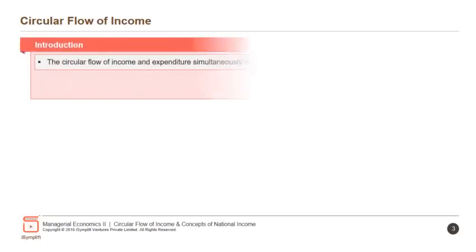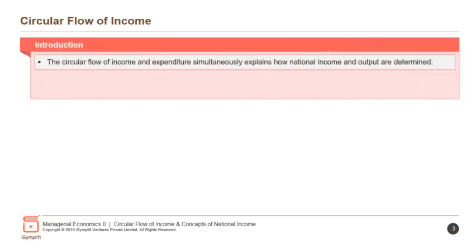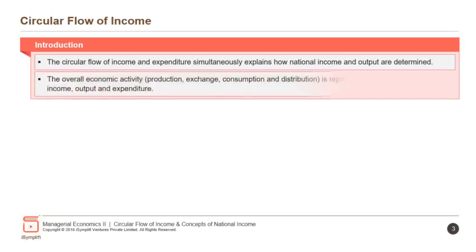The circular flow of income and expenditure simultaneously explains how national income and output are determined. The overall economic activity — production, exchange, consumption and distribution — is represented by a circular flow of income, output and expenditure.